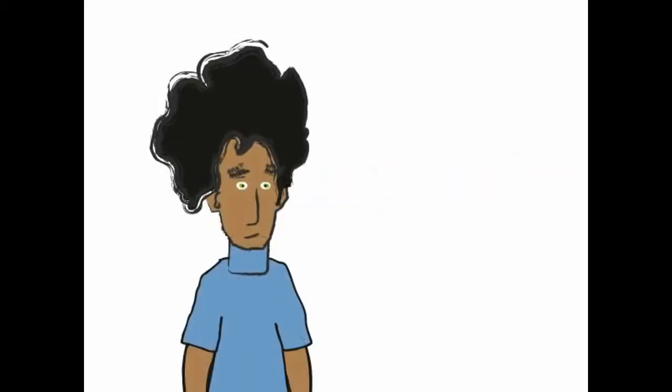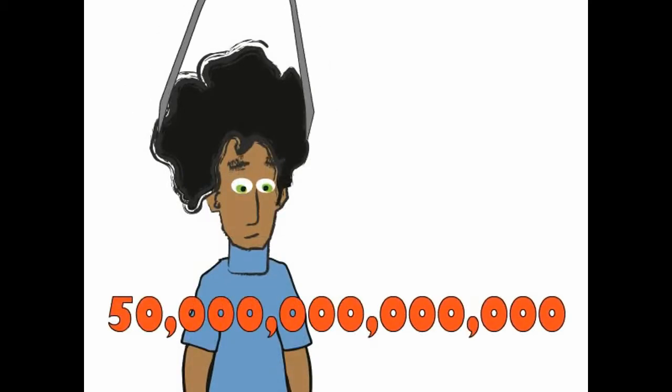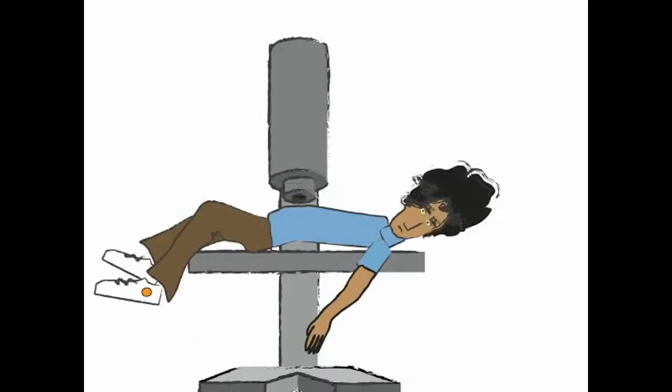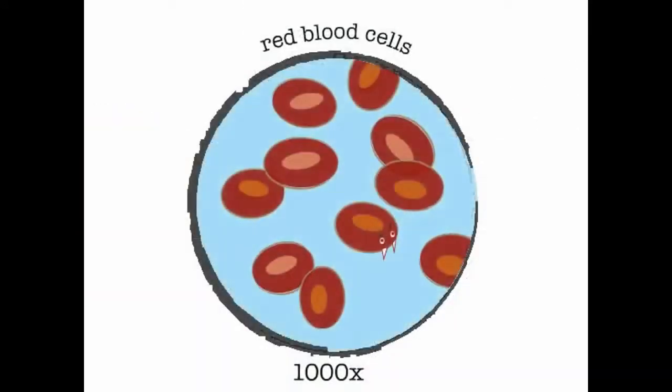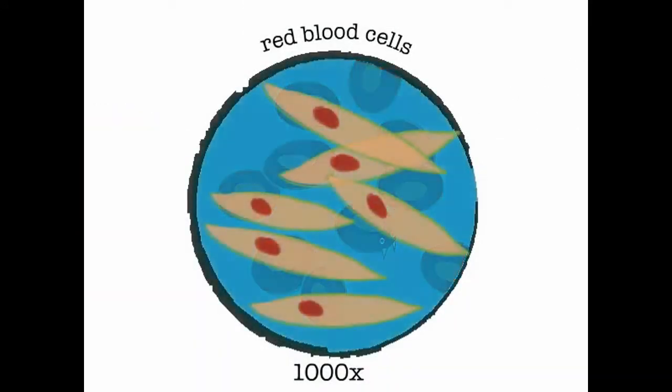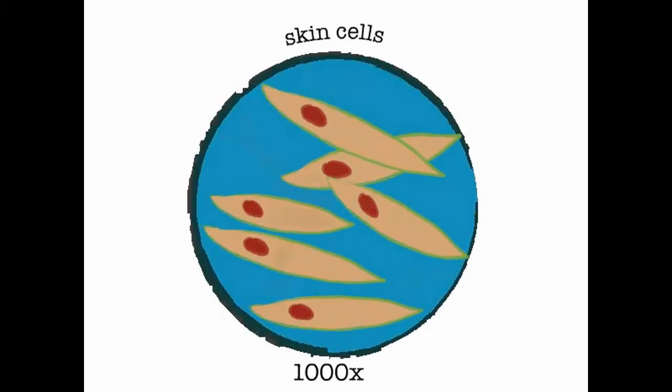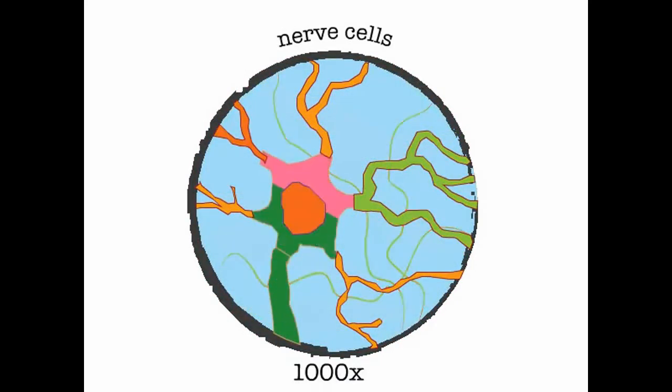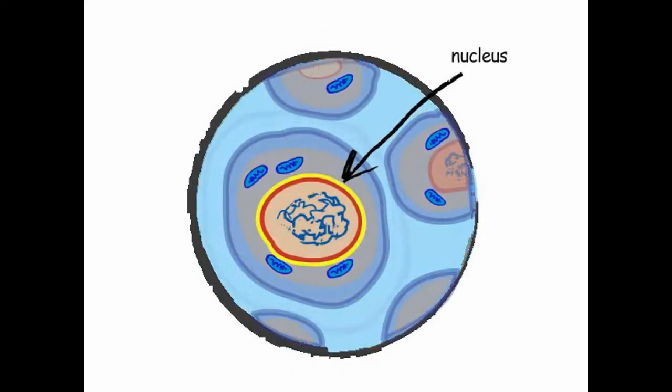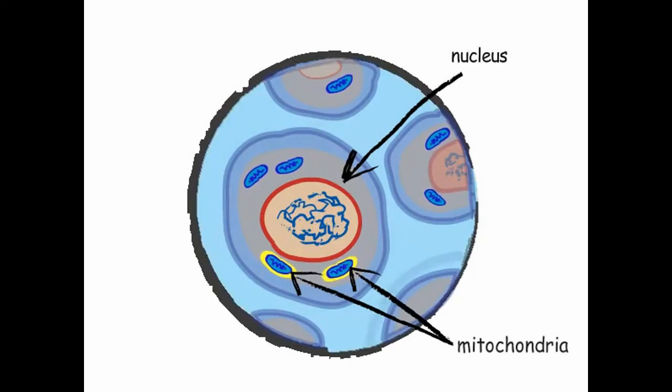Your body is made up of 25 trillion cells. Cells come in many different varieties with many different functions. But inside almost every cell is a nucleus, containing 99.9% of your genes, and mitochondria, containing a few more genes. All told, you have nearly 20,000 genes.